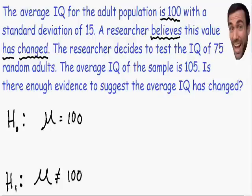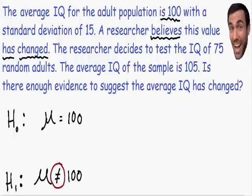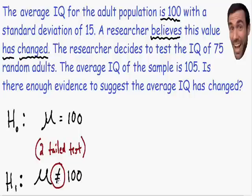The alternative hypothesis is always written with a not-equal sign, a greater-than sign, or a less-than sign. Any time you see the alternative hypothesis written with a not-equal sign, that means we are going to perform a two-tailed test. I'll explain what this means later in this video.